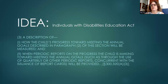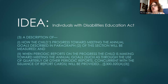Under IDEA — the Individuals with Disabilities Education Act — there is information on progress monitoring. We pulled this right out of IDEA section 300.320, which states that a description of how the child's progress toward meeting the annual goals will be measured, and when periodic reports on the progress the child is making toward meeting the annual goals — such as through the use of a quarterly or other periodic report concurrent with the issuance of report cards — will be provided. Under IDEA, the two key areas to remember are the how and the when.